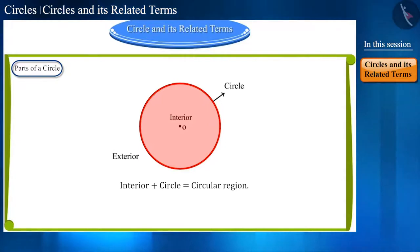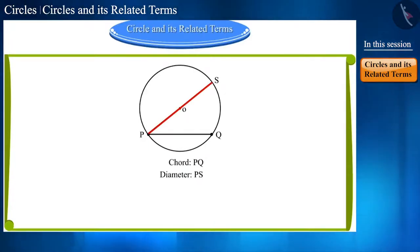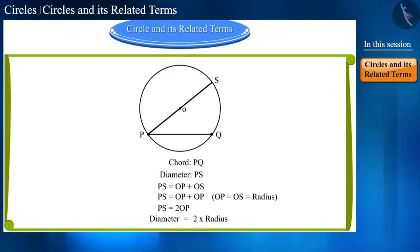Suppose we join any two points lying on this circle like this. Then what will we call this line segment? Yes, we call it a chord. But if a chord is made in such a way that it goes through the center of the circle, then we call such chord a diameter. Line segment PS is the diameter of the circle. Look at this diameter PS carefully; it is made up of two radii. That is, the length of the diameter is twice the radius.